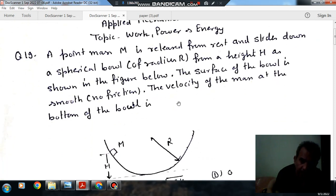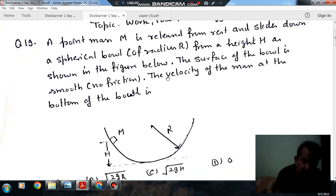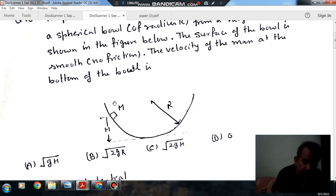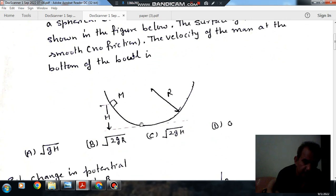from a height H, as shown in the figure below. The surface of the bowl is smooth, no friction. The velocity of mass at the bottom of the bowl will be: Option A, root GH; Option B, root 2GR